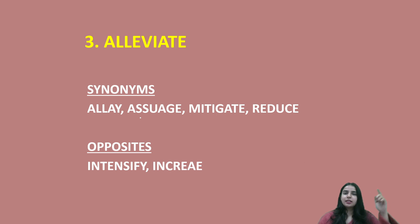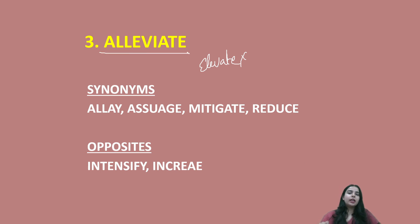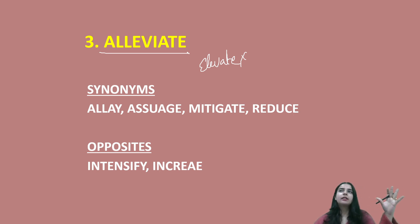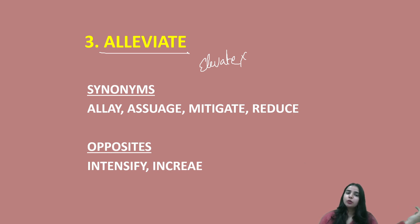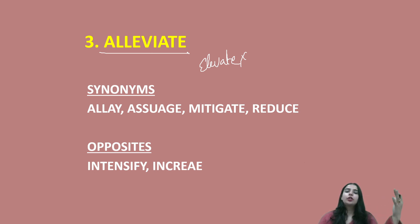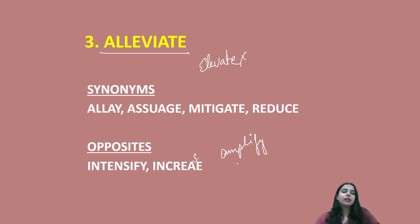Next, let's move to the third word: alleviate. Alleviate ka kya matlab hota hai? Kisi cheez ko kam karna — to reduce something. We also say allay, assuage, mitigate, or reduce. For example, this medicine will help to alleviate your problem, or your pain, or your injury. Alleviate ka matlab hota hai mitigate karna, kisi cheez ko decrease ya reduce karna. The opposite would be to intensify, to increase, or to amplify.